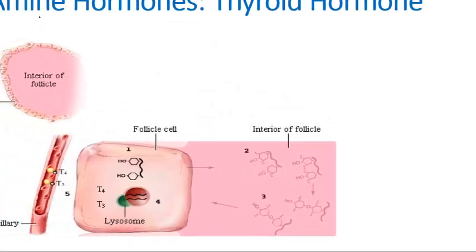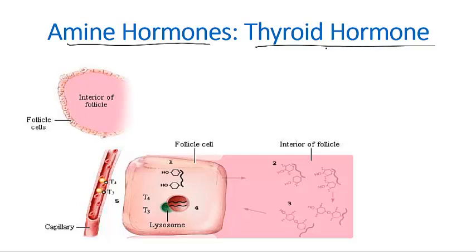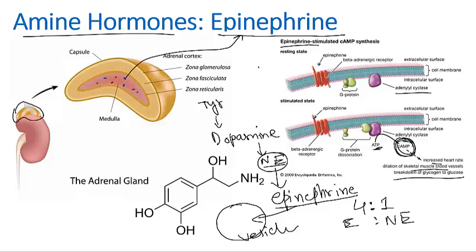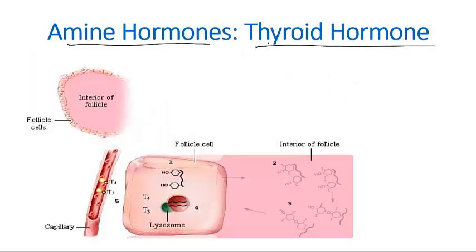Now let's look at another type of amine hormone — thyroid hormone, which is a little different. Epinephrine and norepinephrine are water soluble, but thyroid hormone is lipid soluble. The thyroid gland can store two to three months' worth of thyroid hormone inside its follicles. Thyroid synthesis takes place in the follicular cells. If you look at the follicle of the thyroid gland, the follicular cells surround an interior that is not responsible for making the thyroid hormone.